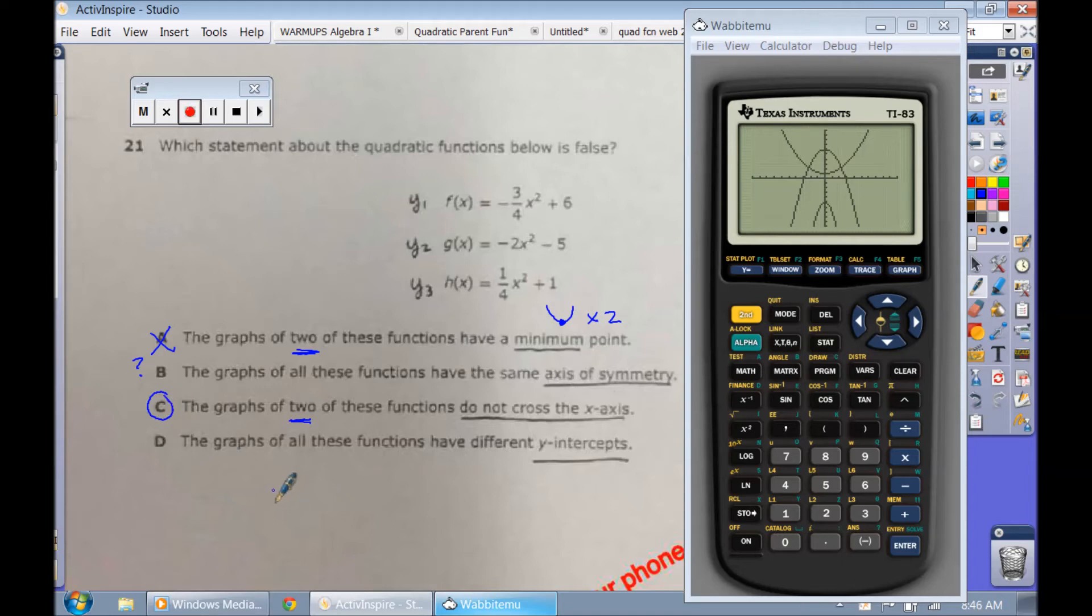I circled it as a yes, but it's really a question mark here. And then the graphs of these functions have different y-intercepts. Are they all three located at different places on the y? Yes. So that's also true. But go back to the question. The question is asking you which one is false. So the one we crossed out is actually our answer, A. Because we're looking for the one that's not.